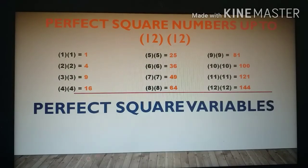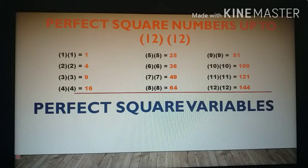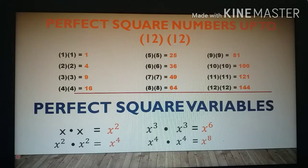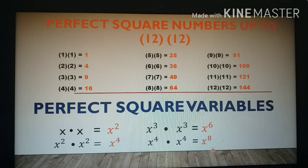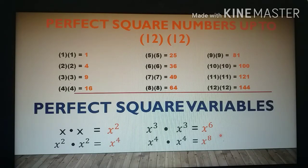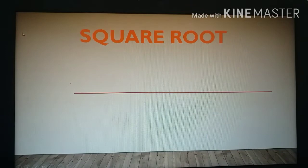Now, perfect square variables — when do we say that a variable is a perfect square? We notice the exponent. For example: x squared, x raised to the fourth power, x raised to the sixth power, and x raised to the eighth power — those variables are considered perfect squares because their exponents are even numbers.